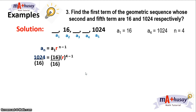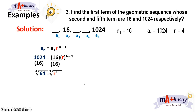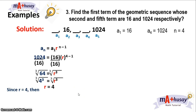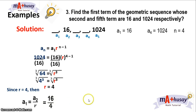We divide both sides of the equation by 16, giving us 64 equals r to the third power, or r cubed. We have to rewrite 64 in exponential form. We know that 64 can be written as 4 cubed. So if we get the cube root of both sides, the 3s cancel and you get r equals 4. Since r is equal to 4, to get the first term we divide the second term, 16, by the common ratio. So 16 divided by 4 is 4. The first term of this sequence is 4.